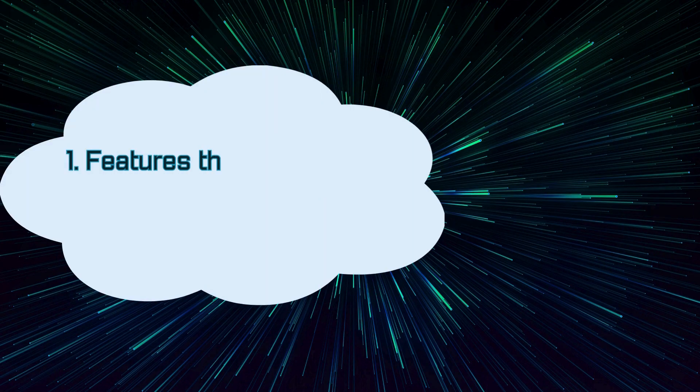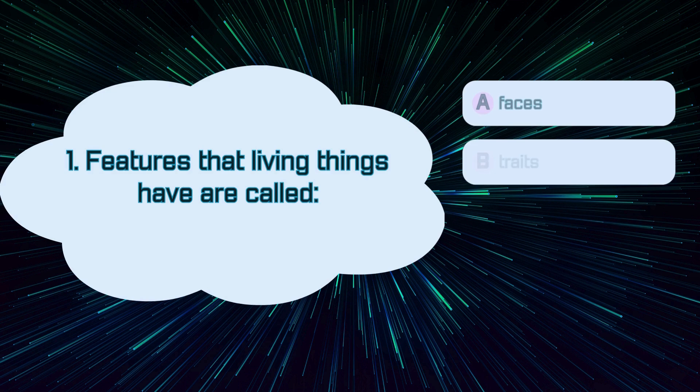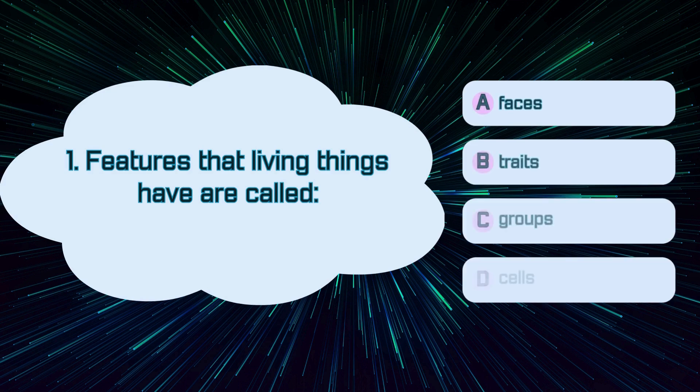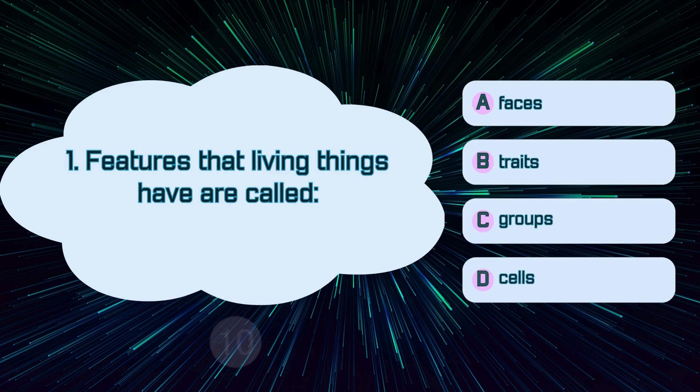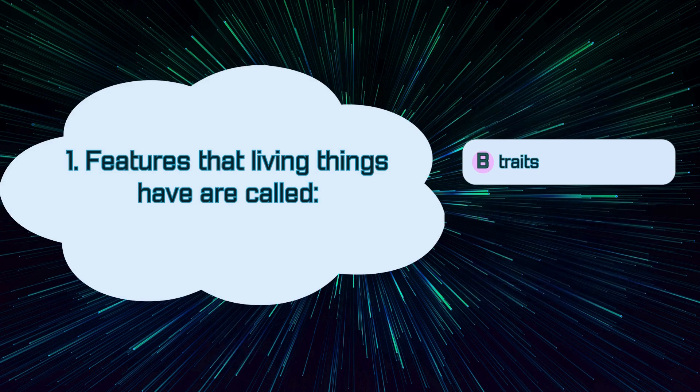Number 1. Features that living things have are called A. Faces, B. Traits, C. Groups, D. Cells. The correct answer is B. Traits.